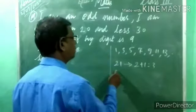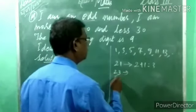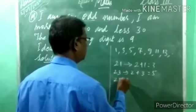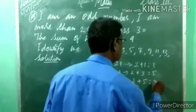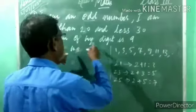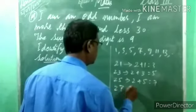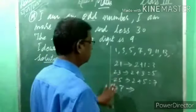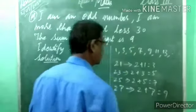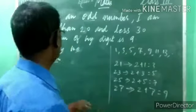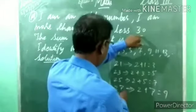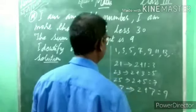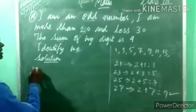After 23, the next odd number is 25: 2 plus 5 is 7 — not 9, not possible. After 25, the next odd number is 27: 2 plus 7 is 9. Here we are getting 9! Now check: 27 is more than 20, less than 30, and the sum of its digits is 9. This may be the correct answer. So the answer is 27.